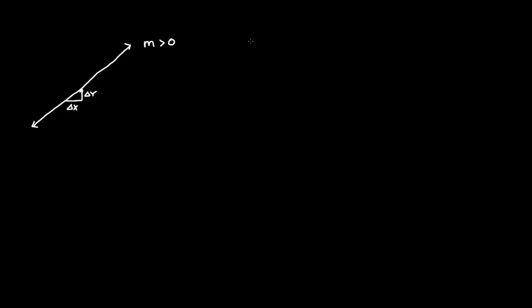Of course, you know this already. And here's another line — or my best attempt at a line. The slope here is negative. When I increase x — that's a delta x, or a change in x — we're going to actually fall. The y value change is negative; we have a negative slope.